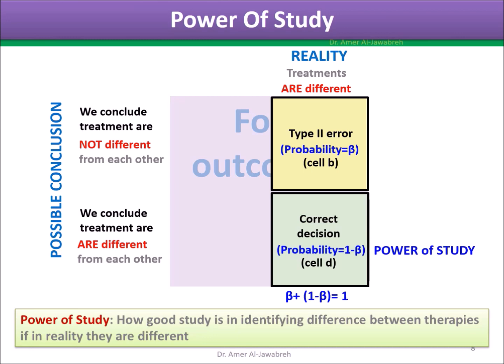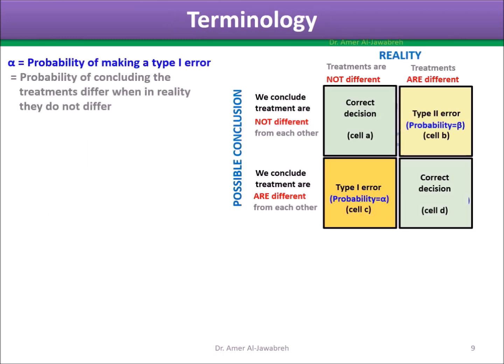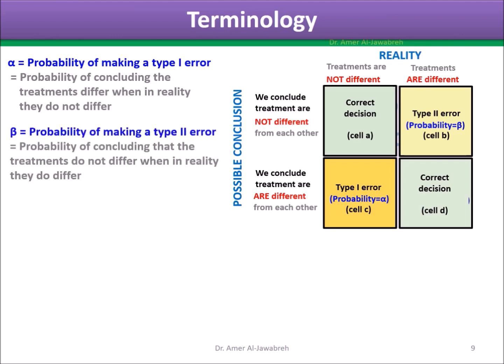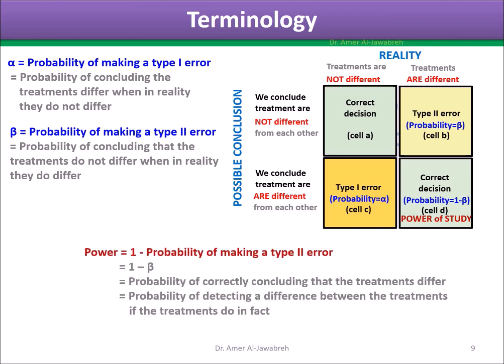Power of the study is the probability of 1 minus beta. Terminology: Alpha is the probability of making a Type 1 error — concluding the treatments differ when in reality they don't. Power is 1 minus the probability of making a Type 2 error (1 minus beta) — the probability of detecting a difference between treatments if the treatments do differ in reality.